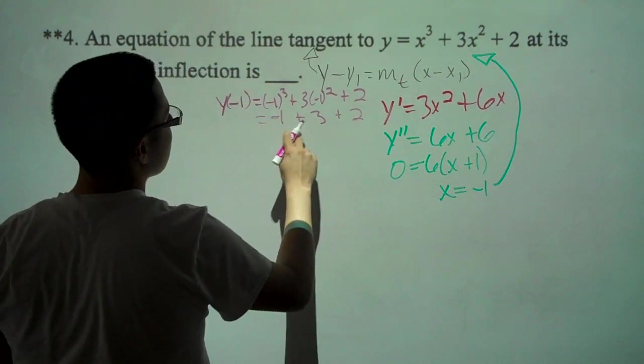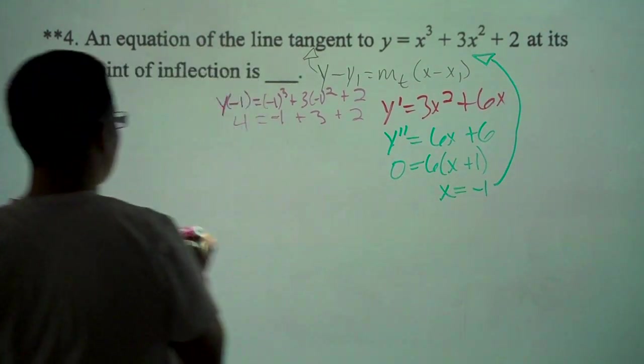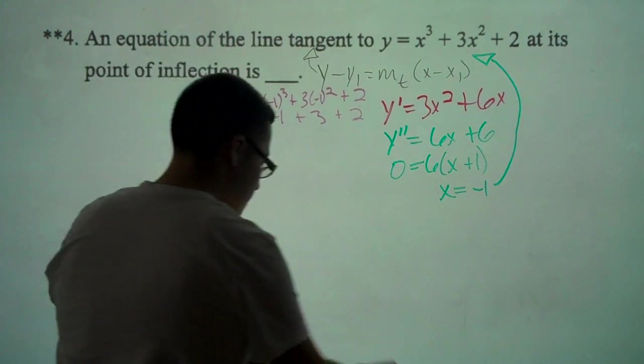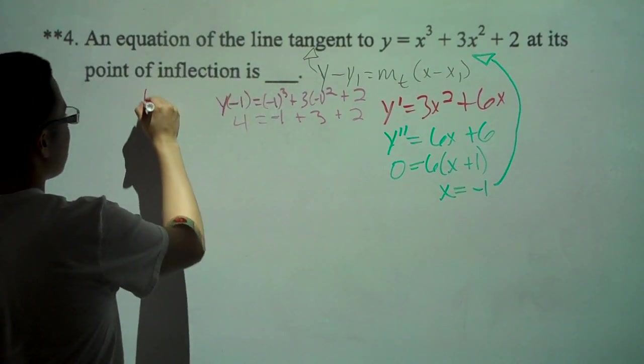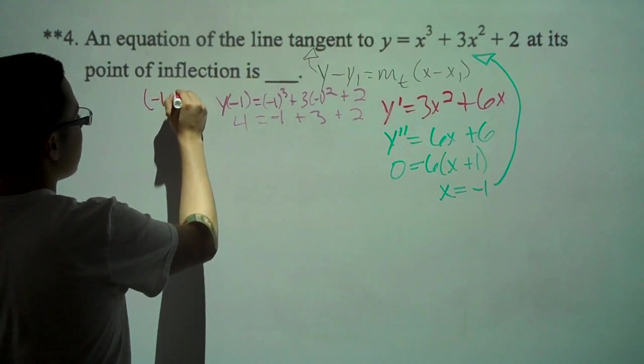this equals 4, so our point is going to be negative 1 comma 4.